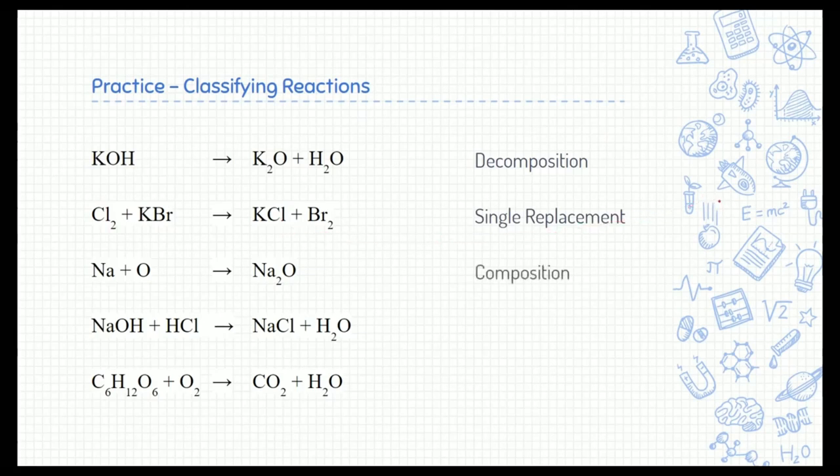The third one is a composition or also called a synthesis reaction where we have two things combining together to make one. The fourth one is a double replacement reaction. We have two partnerships. Sodium goes with chlorine. Hydrogen goes with hydroxide to create water. That's a double replacement reaction. And then the last one is a combustion reaction. We have some type of a hydrocarbon fuel and oxygen and we create carbon dioxide and water.